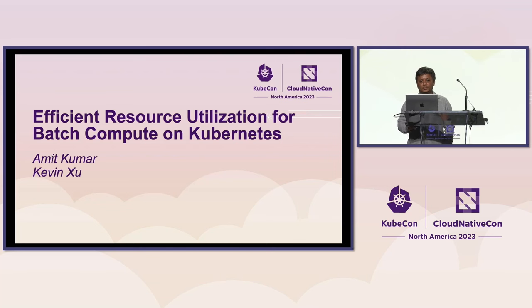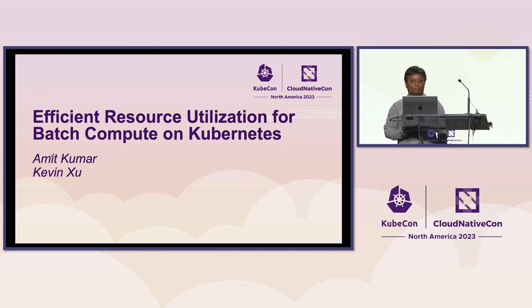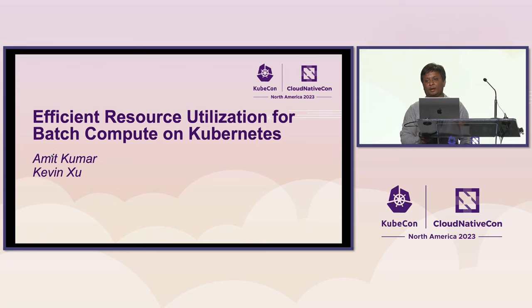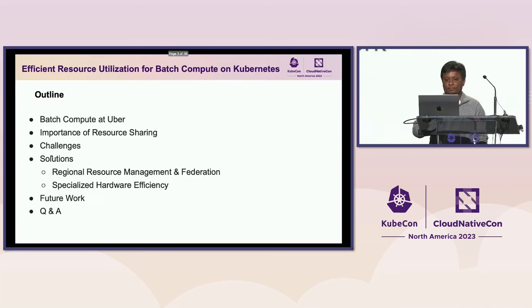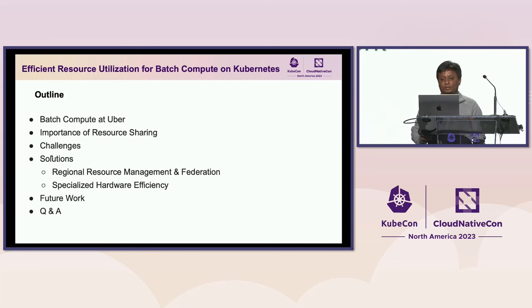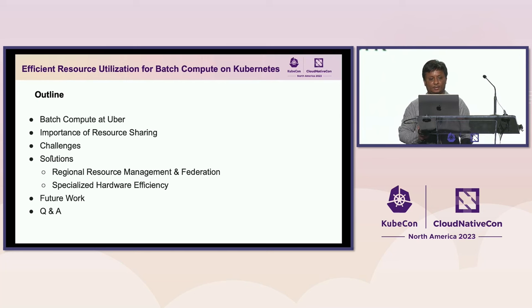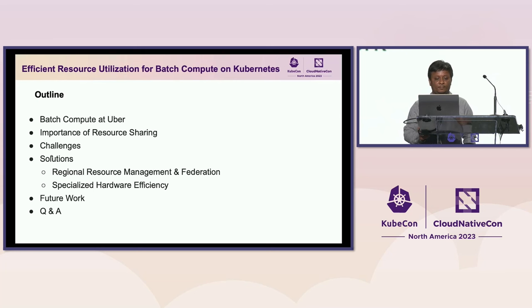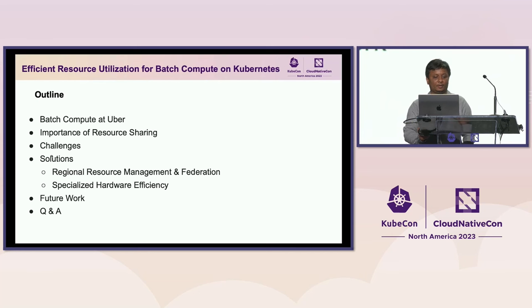We will talk about multiple challenges that we face while achieving efficient resource utilization and how we resolve all of them. Coming to the agenda, first we will talk about batch compute at Uber and an overview. Then we'll talk about the importance of resource sharing, and what types of challenges we face in efficient resource utilization. Then we'll jump to solutions — some key ones are resource and regional resource management and federation, and specialized hardware efficiency. After that, we'll talk about some future work planned for next year, and then we'll happily answer some of your questions.